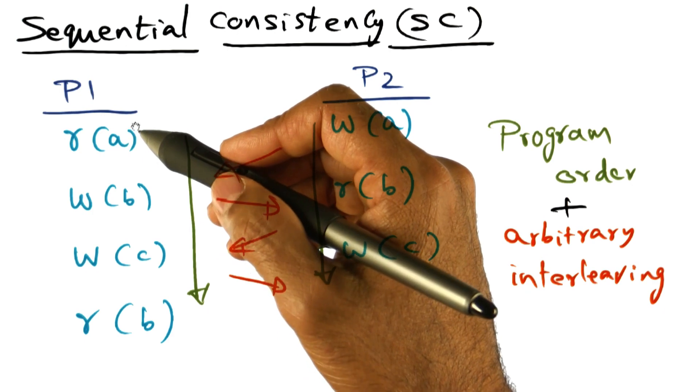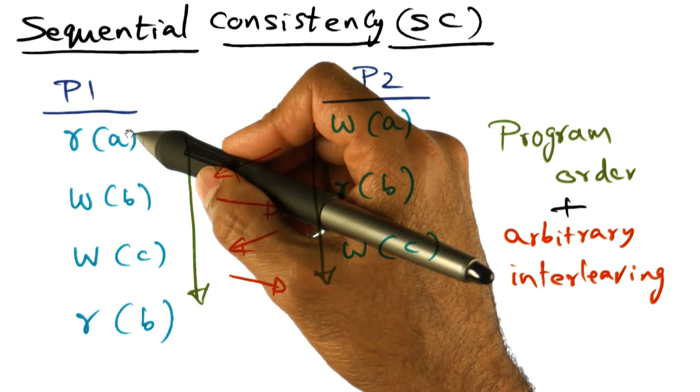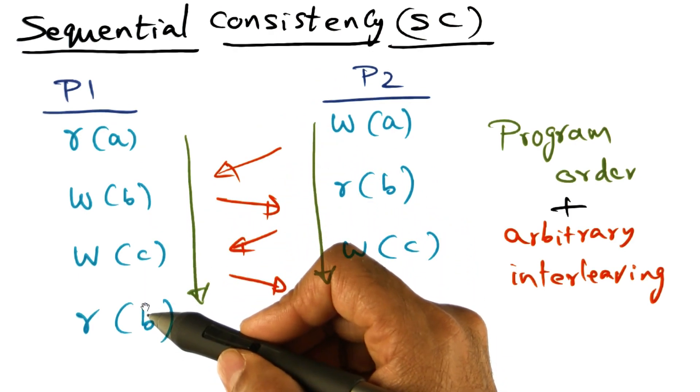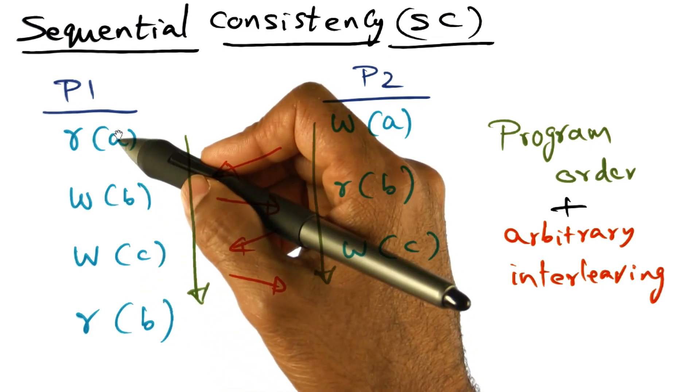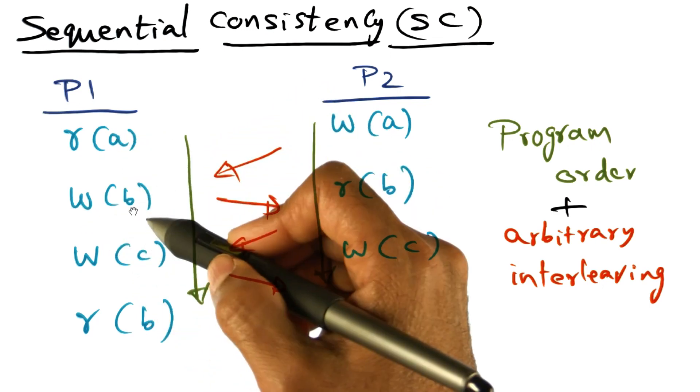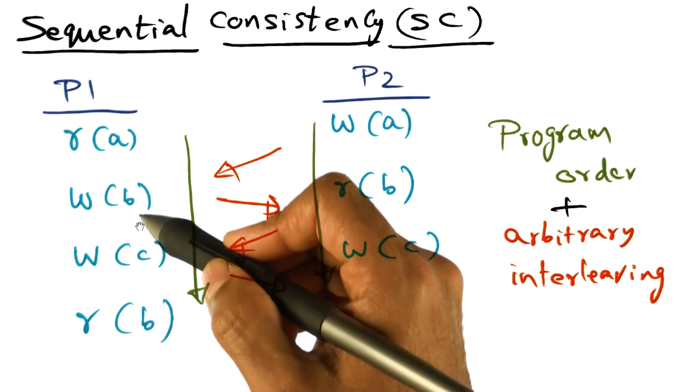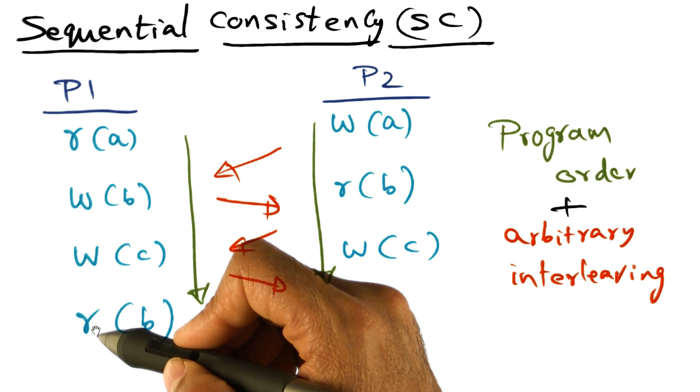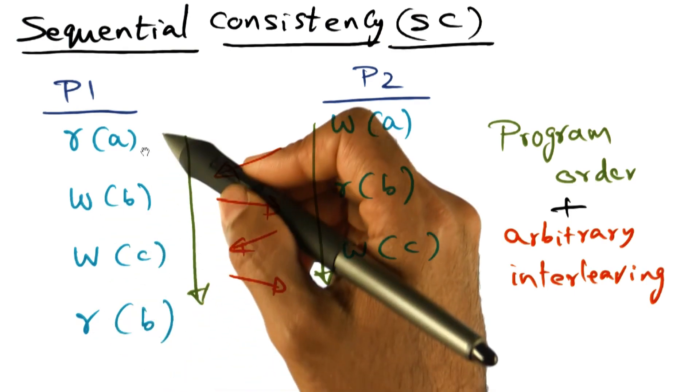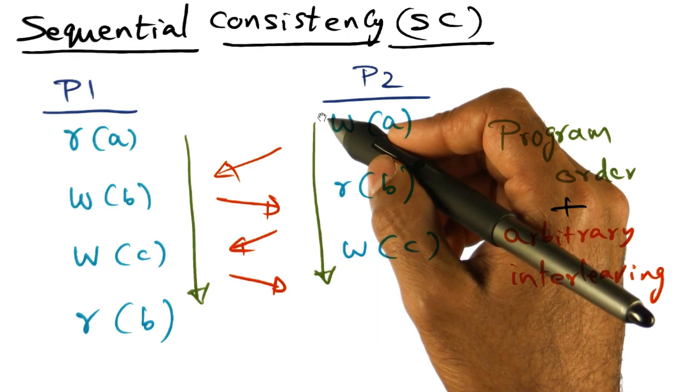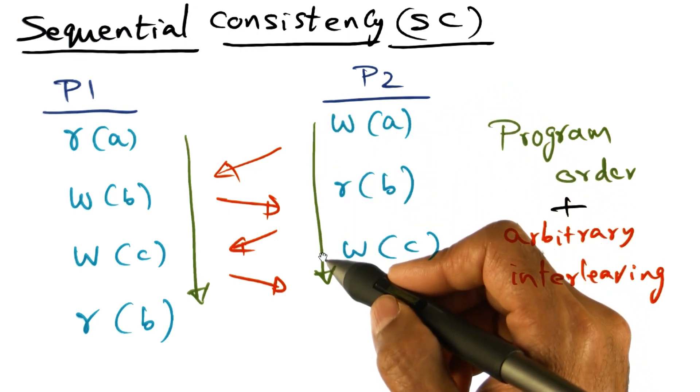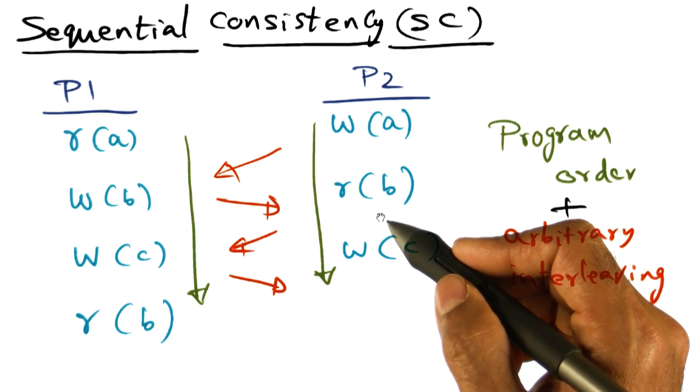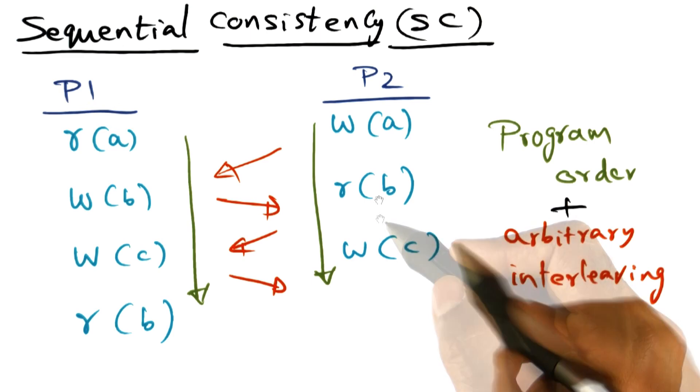One expectation that you have as a programmer is that the accesses on a particular processor are going to be exactly in the order in which you've written it. In other words, if you look at this sequence of accesses, you have a write of B here and a read of B here. When you do this read, whatever you wrote here is what you expect to see. That's what is called the program order. What you expect is the program order to be maintained, namely the order in which you've generated memory accesses should be maintained by the execution on that processor. That's program order.